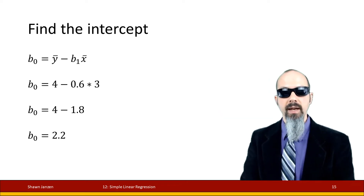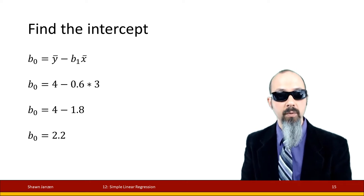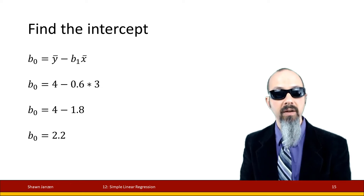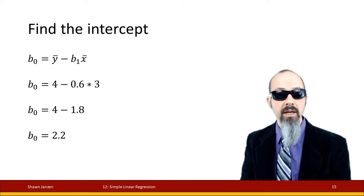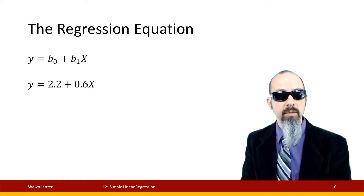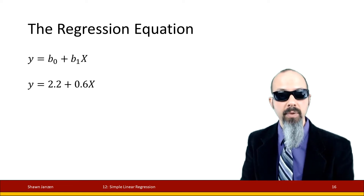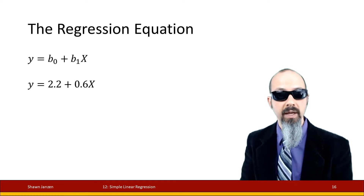Now let's find b0, our intercept. The mean of y is 4, the mean of x is 3, and we just computed slope as 0.6. Plugging these into the intercept equation gives us 2.2. So our full regression equation is y equals 2.2 plus 0.6x — meaning for any given value of x, we can find a corresponding predicted value of y.